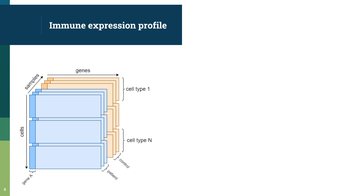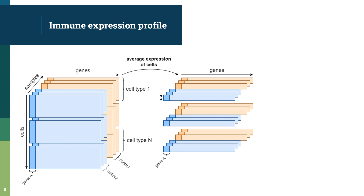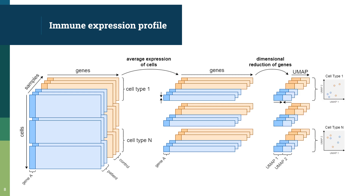We have our data composed of several samples. For each sample, the expression of each gene is stored for each cell, and cells are regrouped by immune cell type. Now we need to characterize the immune expression profiles of cells from a specific immune cell type, and this for each sample. To do so, we start by averaging the expression of each gene over all the cells labeled as a common cell type, and this for every sample. Afterwards, we reduce dimensionally the expression of genes into two reduced variables by applying a PCA and then a UMAP. This gives us, for each cell type, two values reflecting the immune expression profile of each sample.